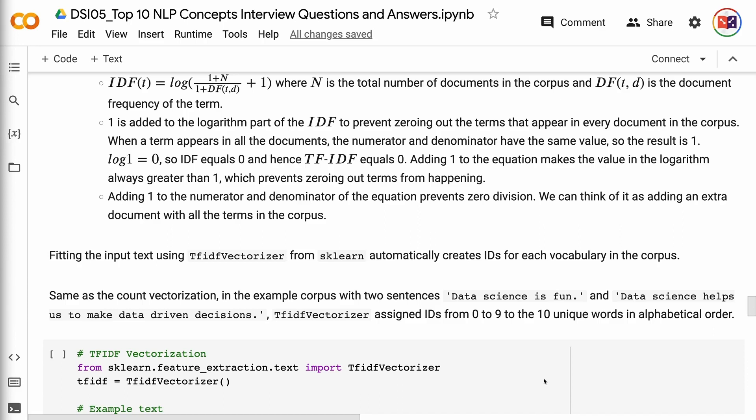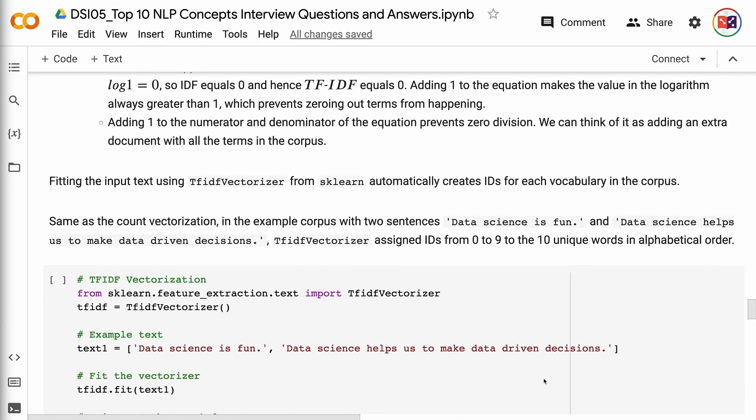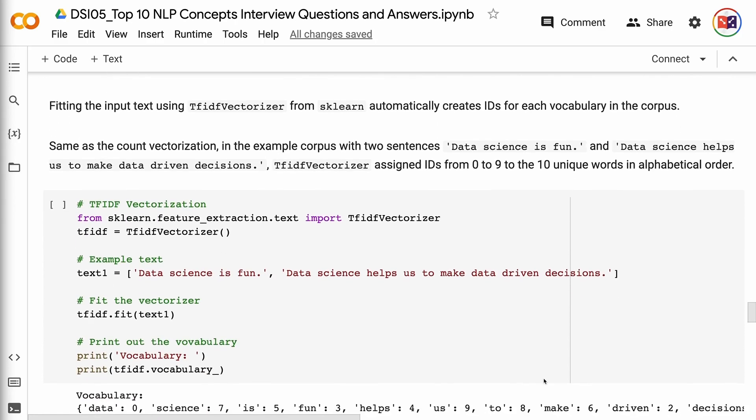Fitting the input text using TfidfVectorizer from scikit-learn automatically creates IDs for each vocabulary in the corpus. Same as the count vectorization, in the example corpus with two sentences data science is fun and data science helps us to make data-driven decisions, TfidfVectorizer assigned IDs from 0 to 9 to the 10 unique words in alphabetical order. Transform method produces the TF-IDF vector values.